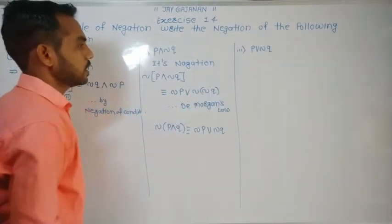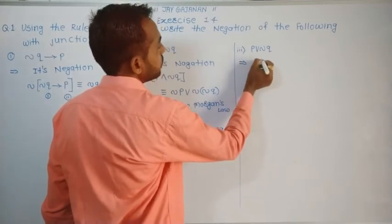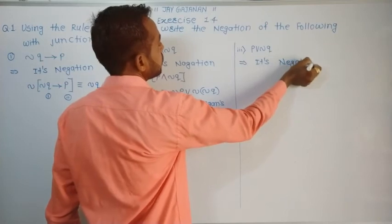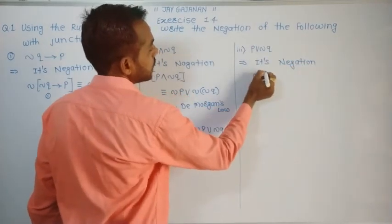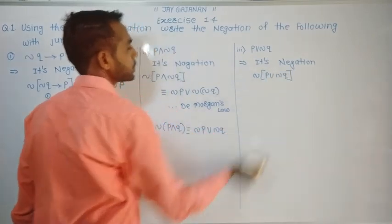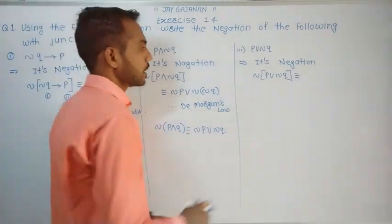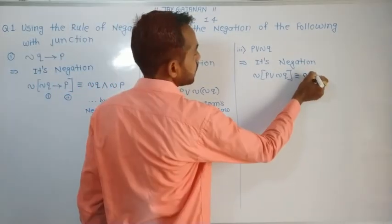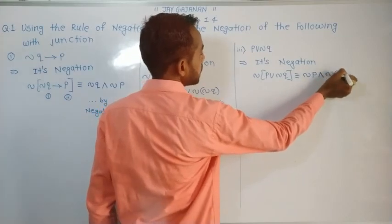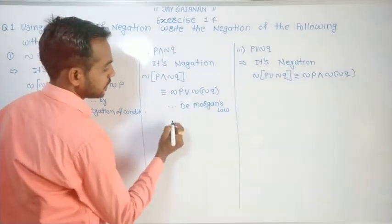Third example: P or negation Q. Applying De Morgan's law, its negation becomes negation P and negation of negation Q. Here we note one step with negation of negation Q.